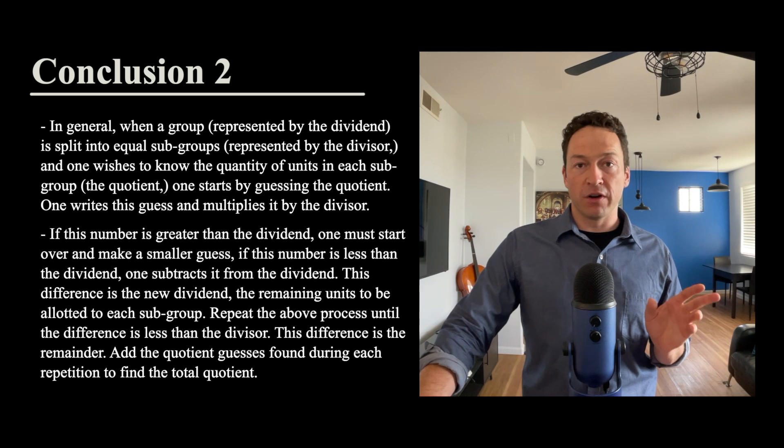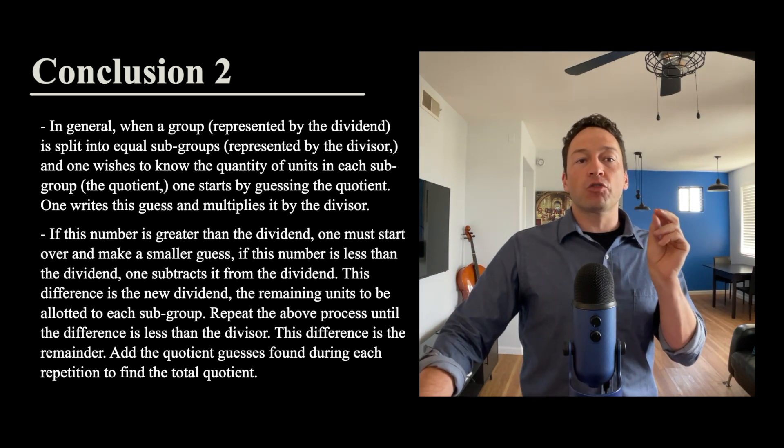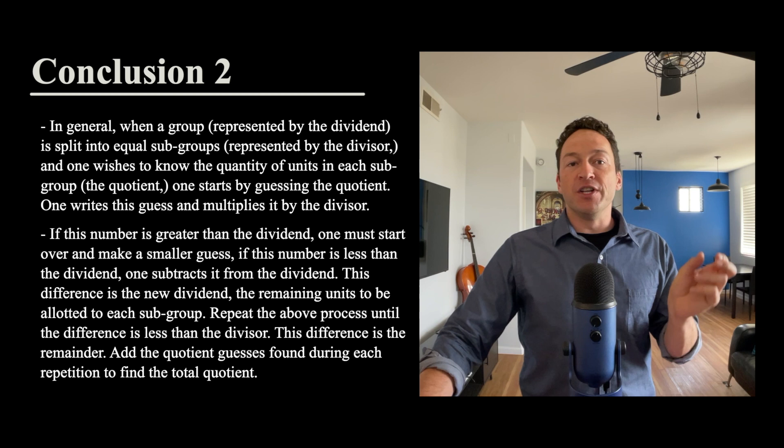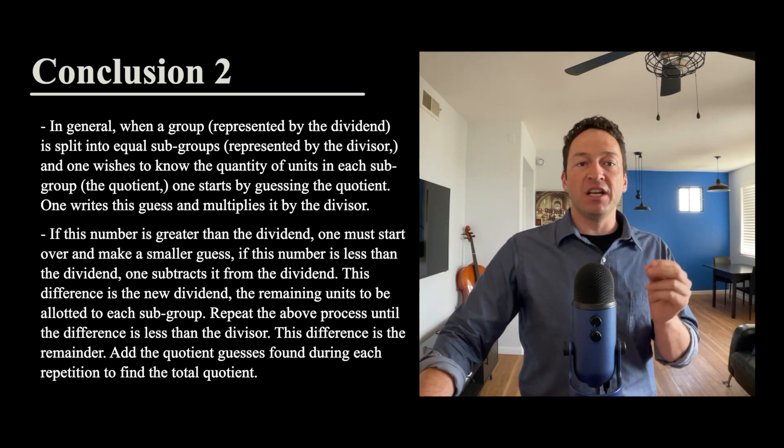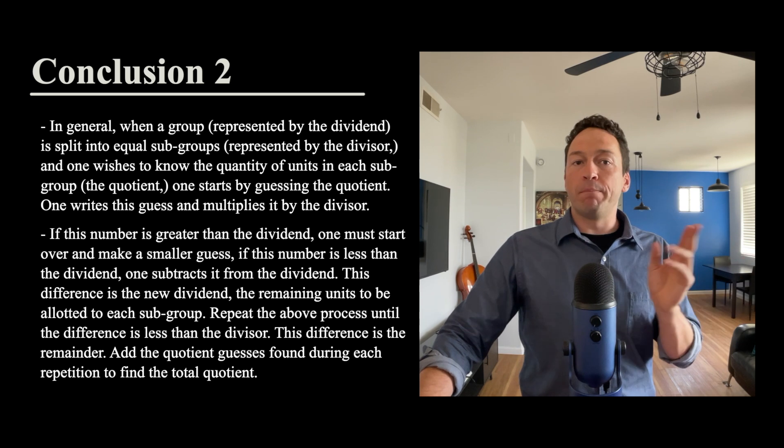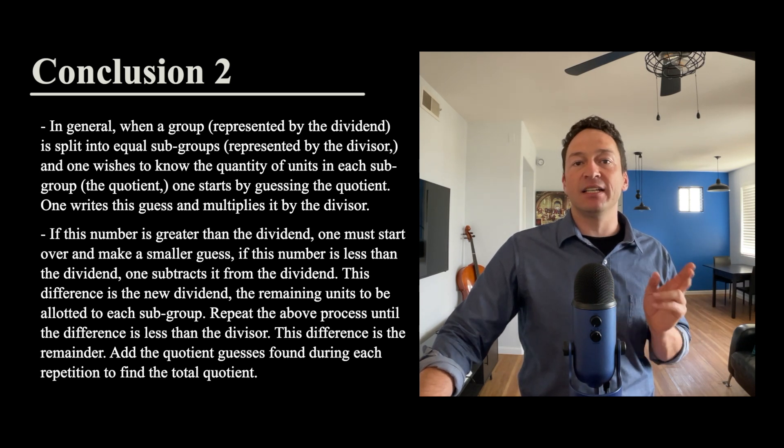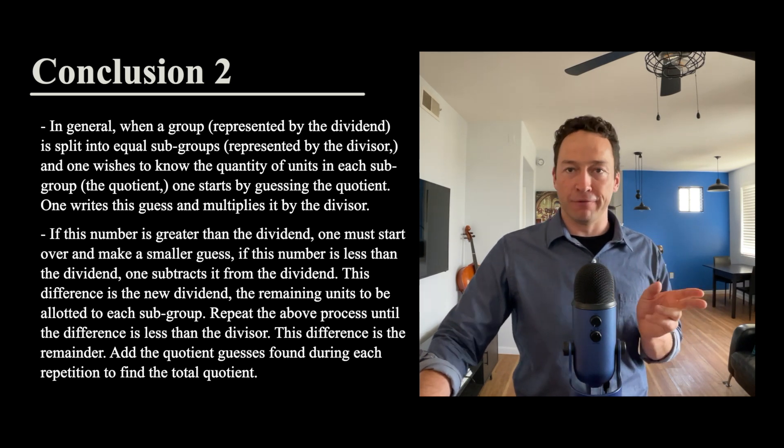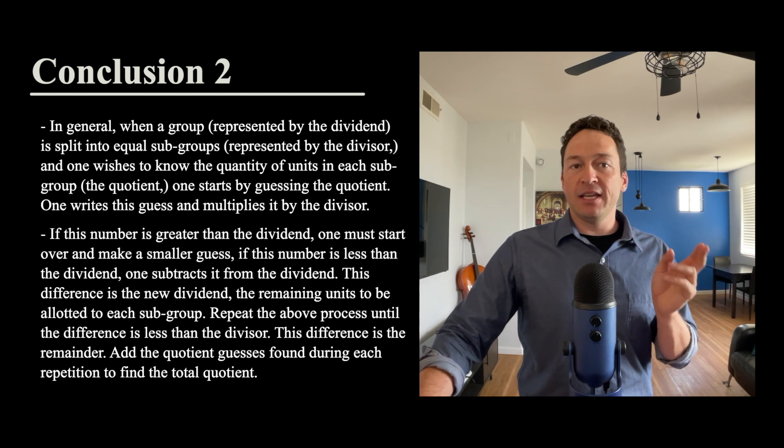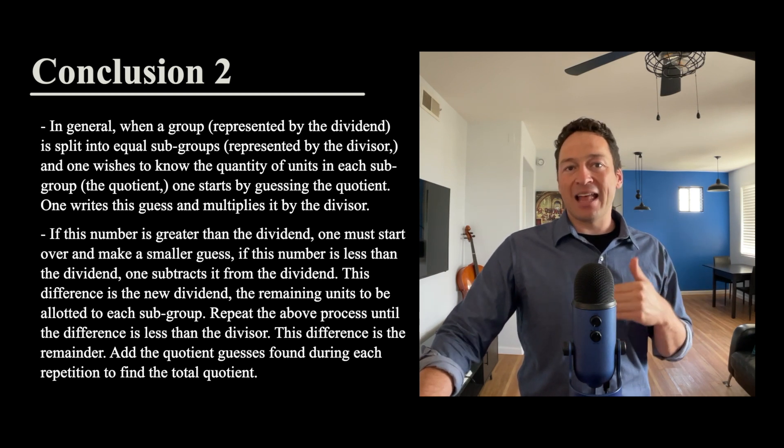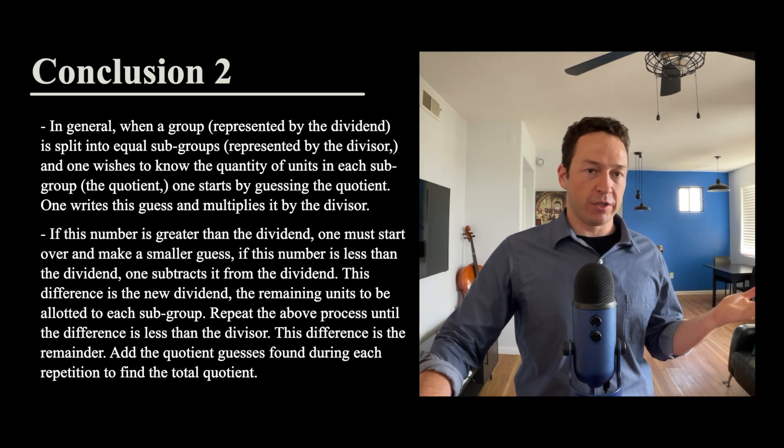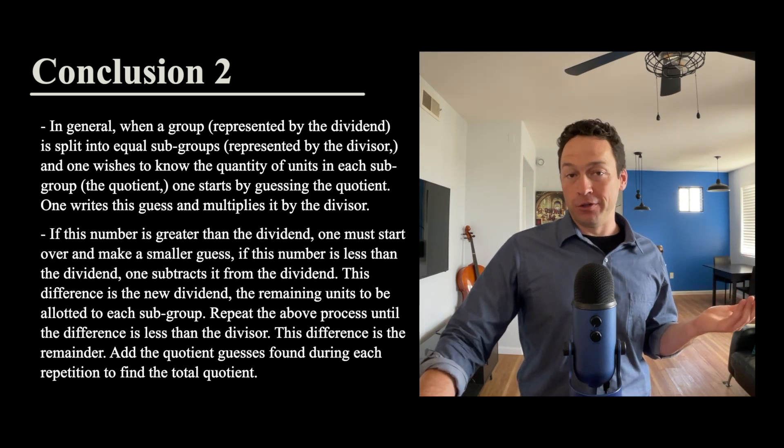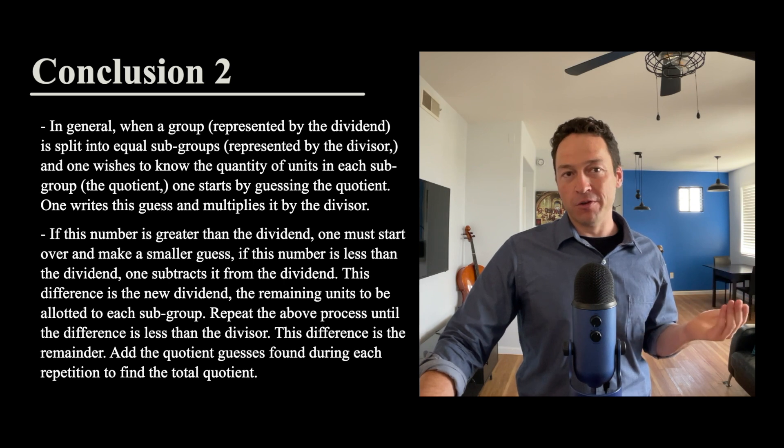The difference is then the new dividend and the remaining units to be allotted to each subgroup. Repeat the above process until the difference is less than the divisor. This difference is then the remainder. Add the quotient guesses found during each repetition to find the total quotient. So that is how to do long division in Roman numerals.